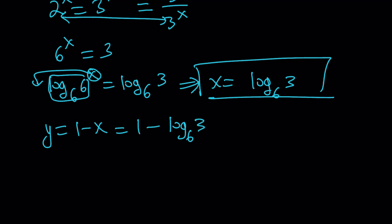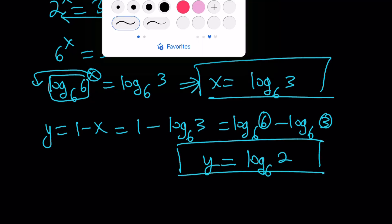So y equals 1 minus x gives us 1 minus log 3, base 6. And obviously, this can be written as log 6 in base 6. And then we can use the quotient property of logs. You just divide these numbers and use the same base. This becomes log 2 with base 6. So that's our y value. Let's talk about the second method.